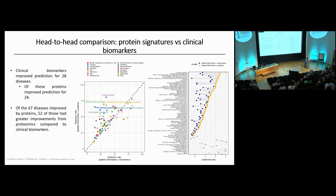Going back to UK Biobank, taking the clinical benchmark is a relatively weak comparison. The next step was to compare the performance of our protein models against clinical biomarkers. I'm showing detection rates for the biomarker benchmark versus novel protein signatures, and the same represented with likelihood ratios.